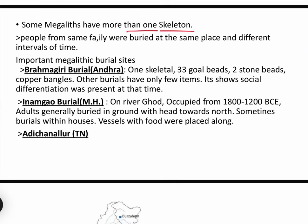In some megaliths, more than one skeleton has been found — sometimes up to six skeletons. This means that at times people from the same family were buried at the same place, obviously at different intervals of time. So it was also practiced that in one mound there are many people buried.